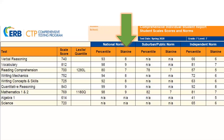Next to the percentile rank, you will see a stanine. A stanine is a quick way to compare your student's performance to the performance of students in a norm group. Stanines are calculated by dividing the student's percentile rank in a norm group into 9 subgroups. These stanines are numbered 1 through 9, where 1 is the lowest and 9 is the highest. These stanine subgroups are not equivalent in size.